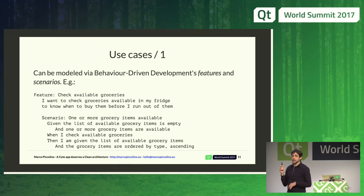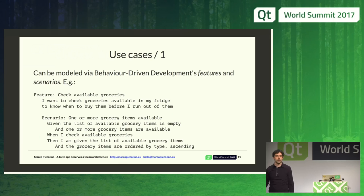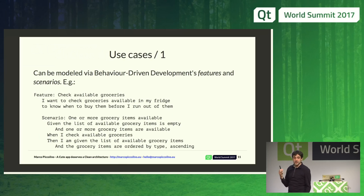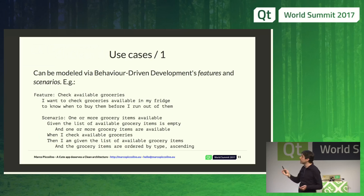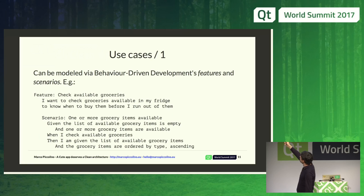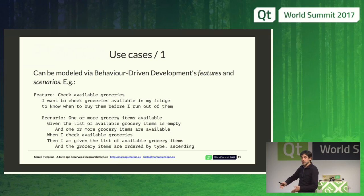Use cases can be modeled with Behavior Driven Development. Basically, it's a way of looking at features in software that starts from scenarios. For example, in a simple application where I want to see what's left in my fridge before I starve: the feature is 'check available groceries,' and I describe that scenario in terms of prerequisites, actions of my system, and outcomes I want to achieve.